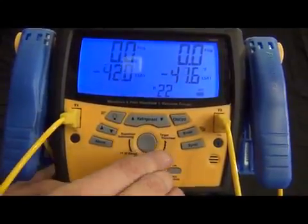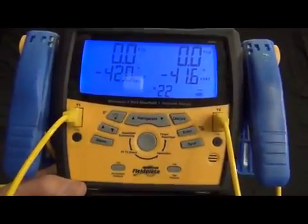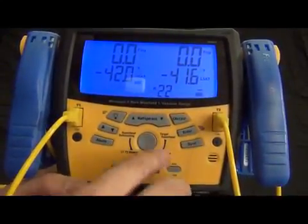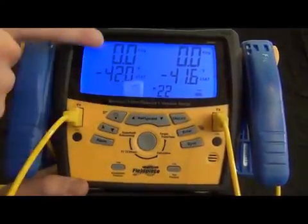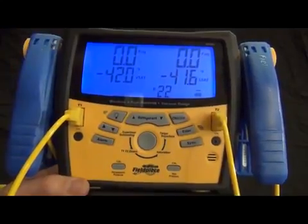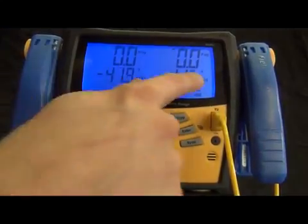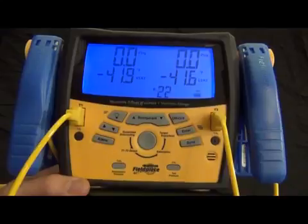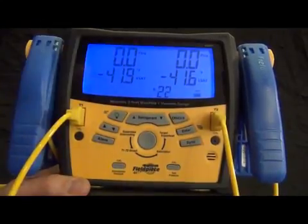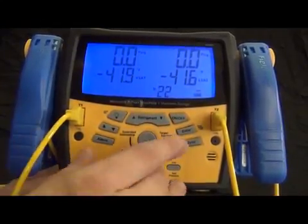All right, next mode is saturation. This is basically your PT chart built right in. And so R22 at zero psi has a vapor saturation of negative 42 and a liquid saturation of 41.6. So very tiny amount of temperature glide with R22.